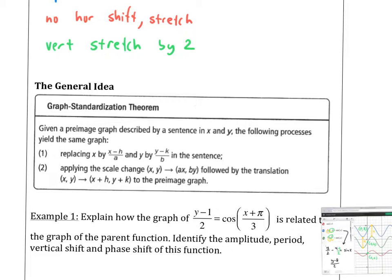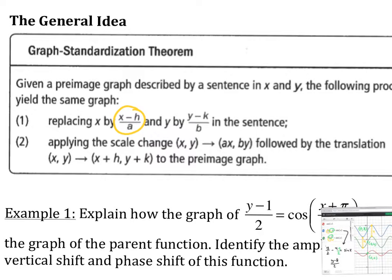Let's look at the graph standardization theorem and it says this. Given a pre-image, the original graph, described by a sentence X and Y, the following processes yield the same graph. If we were to replace X with (X - H) / A, notice that you have to have the big vinculum, the division bar there, that's called a vinculum. And the same thing here is we have to have the large vinculum as opposed to Y / B - K, not Y / B - K, but (Y - K) / B. So that is the exact same thing as number one, scale change, and then number two, translation. In that order, it has to be scale change first and then translation.